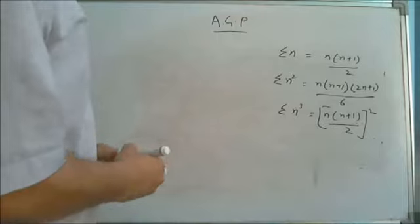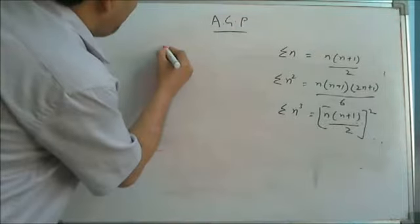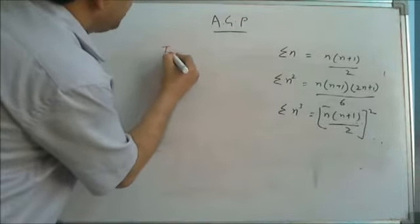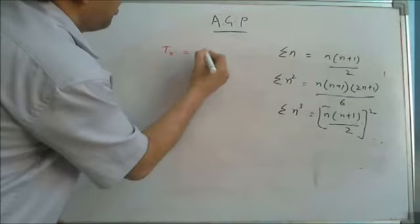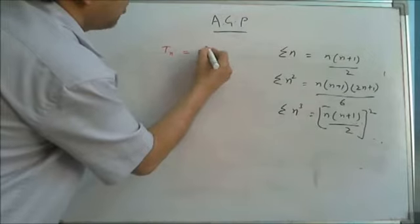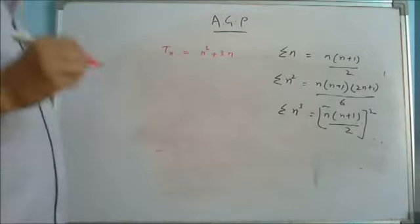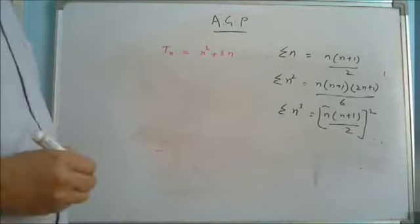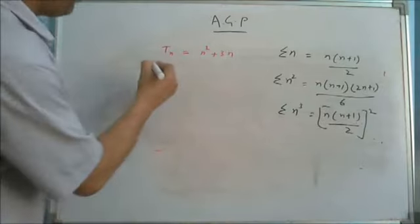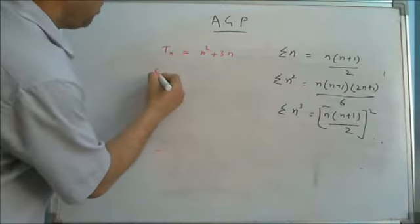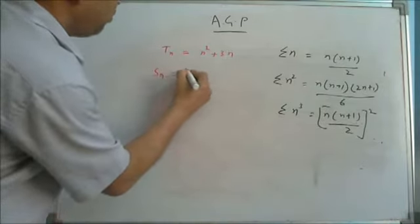Suppose the nth term of a series is n² + 3n, and I have to find the sum of that series for n terms. What is the formula? You just understand this formula very clearly.